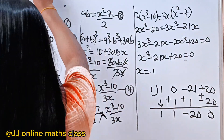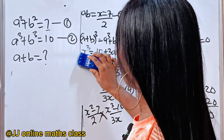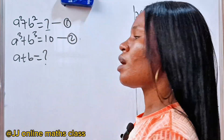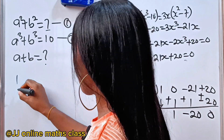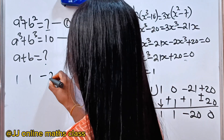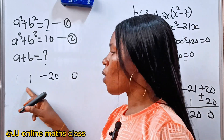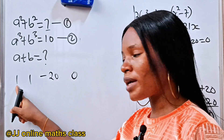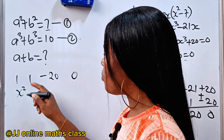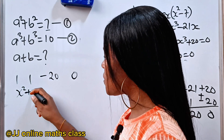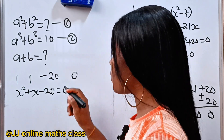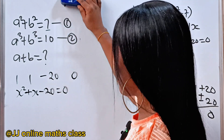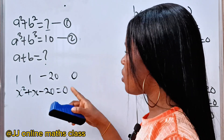Those coefficients — 1, 1, minus 20 — give us the quadratic equation: x squared plus x minus 20 equals zero.